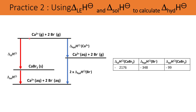Looking at the cycle: starting with gaseous ions, the lattice enthalpy forms the solid ionic compound, which then undergoes its exothermic enthalpy change of solution to form aqueous ions. Alternatively, the calcium ion undergoes hydration to form aqueous calcium ions, while bromine remains gaseous, and then the bromide ions undergo twice the enthalpy change of hydration of bromide to get to aqueous bromide ions.